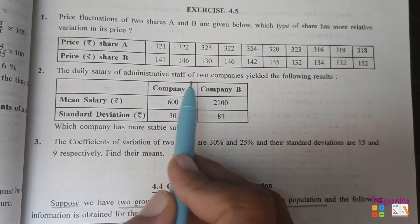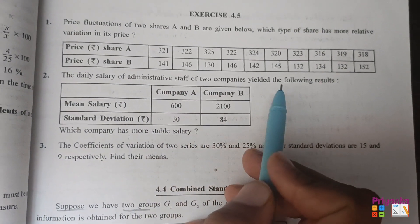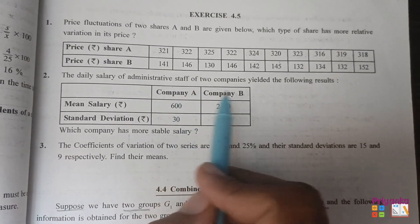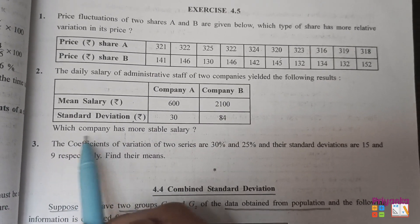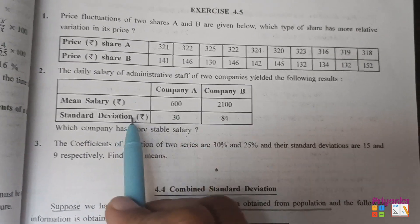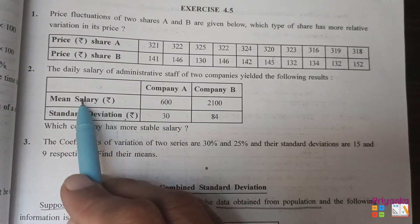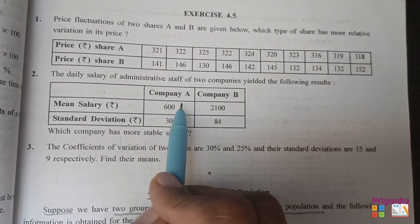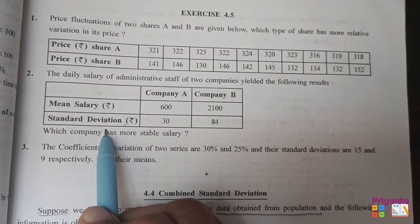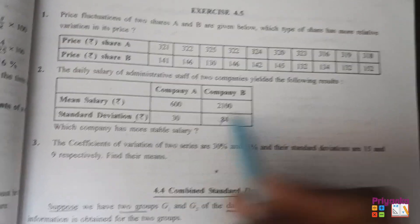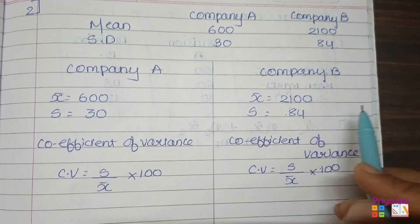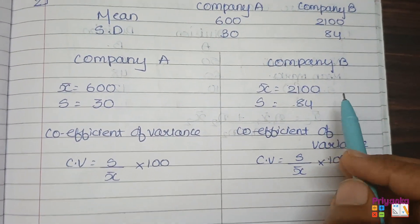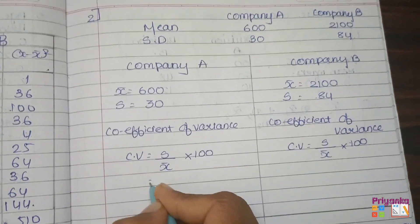The daily salary of administrative staff of two companies yielded the following result. Here company A and B mean and standard deviation are given. Find which company has more stable salary. So here we already have the information for mean, the comparison of company A and B, and standard deviation of company A and B. So let's take all the information in the book. And here you can see the mean and standard deviation is ready, so no need to find out anything. Just keep into the formula to find out the answer.